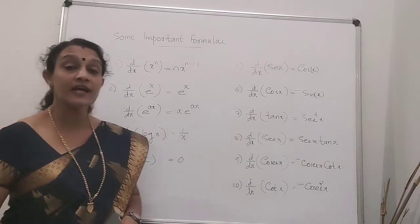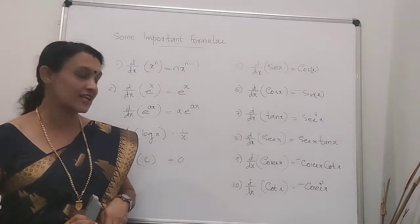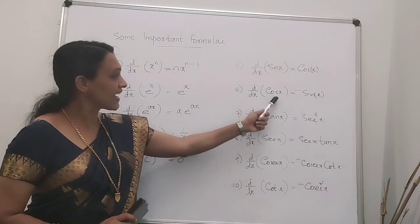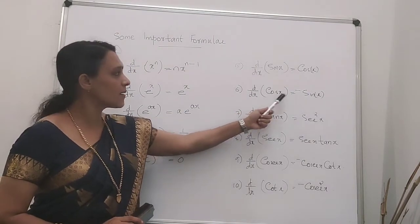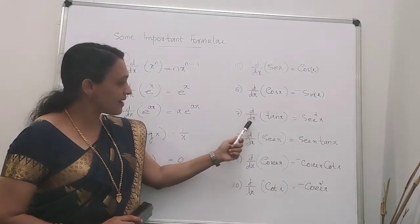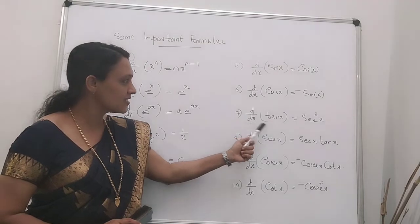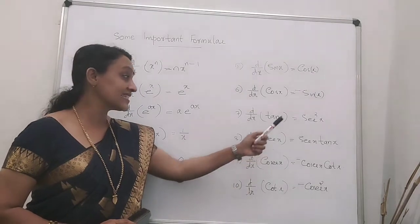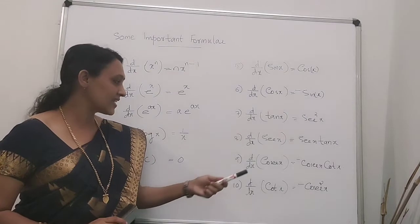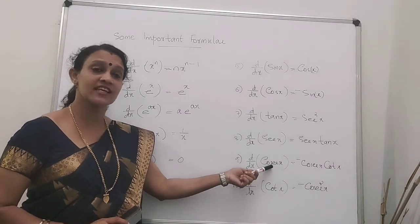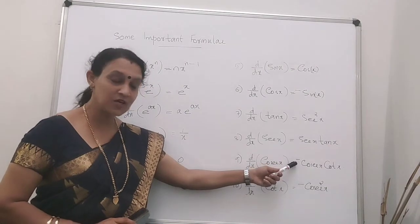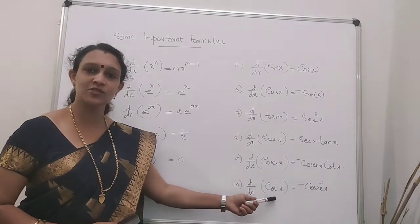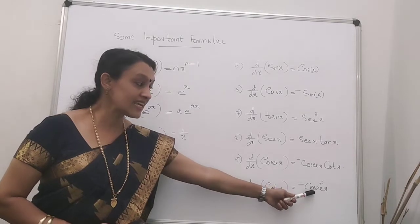Now coming to the trigonometric functions — there are 6 of them. The derivative of sin x is cos x. The derivative of cos x is minus sin x. The derivative of tan x is sec squared x. The derivative of sec x is sec x into tan x. The derivative of csc x is minus csc x into cot x. And the derivative of cot x is minus csc squared x.